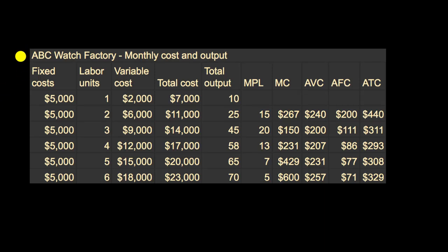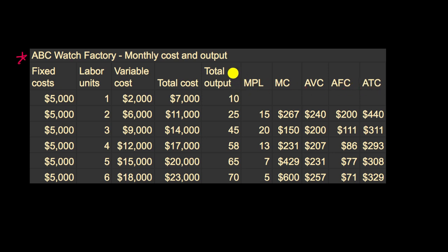In the previous video, we began our study of ABC Watch Factory and tried to understand the economics of the business based on data we had collected on costs and output relative to labor units. From that, we calculated the marginal product of labor, the marginal cost, the average variable cost, the average fixed cost, and the average total cost.